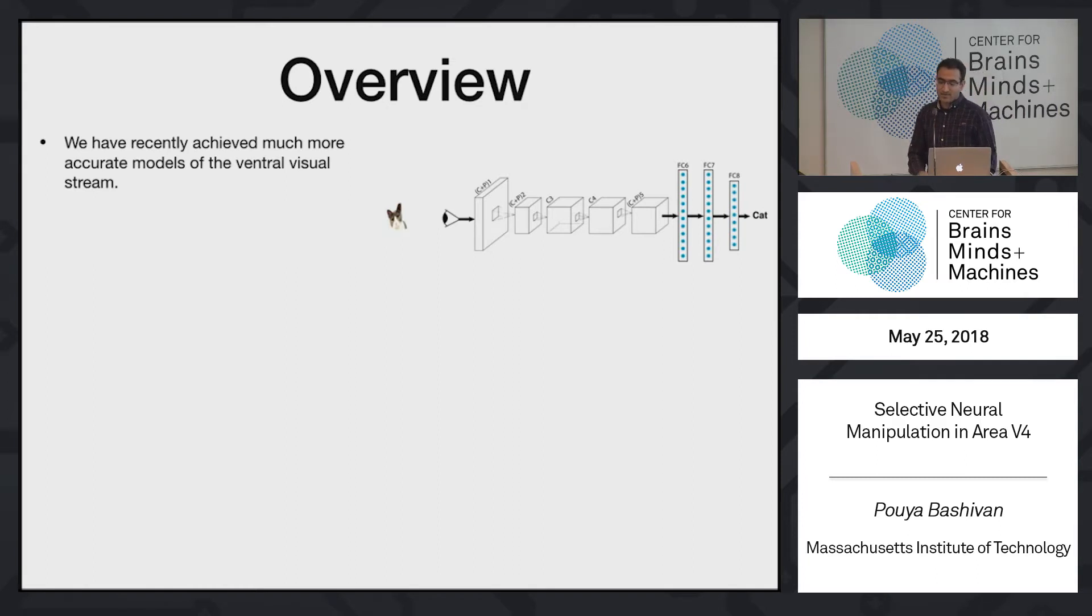I'm also going to start by showing you a schematic of a convolutional neural network. I know that all of you guys have seen many of these schematics this morning. Hope this would be the last one. So what we know is that recently, in the past few years, we have dramatically increased the accuracy of the models that we have for predicting neurons in different areas, different regions along the ventral visual stream. These models are mostly convolutional neural networks.